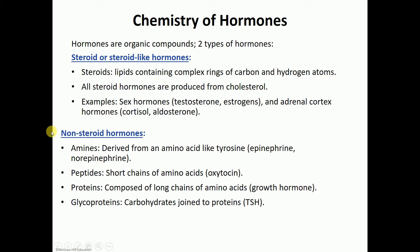The non-steroid hormones, which used to be called protein hormones but are now called just non-steroid hormones, are either made out of an amino acid — where the cell would take an amino acid like tyrosine and switch it up a little bit to make epinephrine or norepinephrine. That is known as an amine hormone. A peptide hormone is a short chain of amino acids — for example, oxytocin.